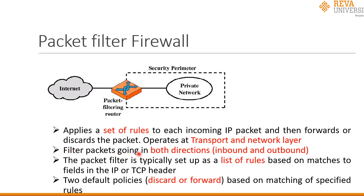The packet filtering router filters packets going in both directions — from the internet to the private network (inbound) and from the private network to the internet (outbound). A packet filter typically consists of a set of rules based on matches to fields in the IP header or TCP header. There are two default policies: discard a packet or forward a packet, based on matching specified rules.